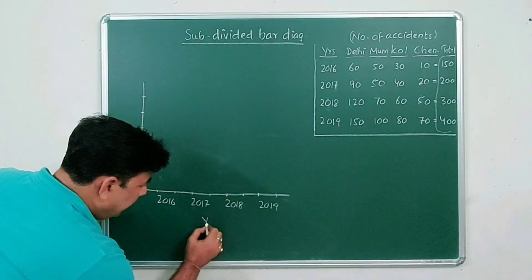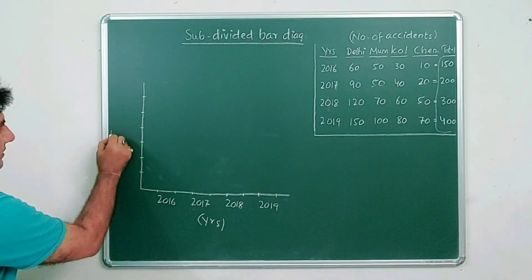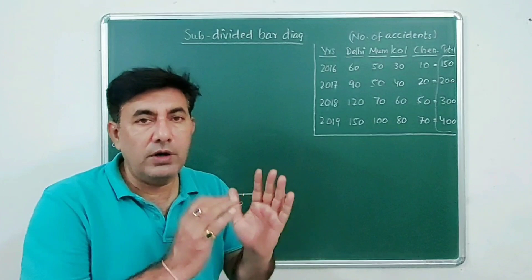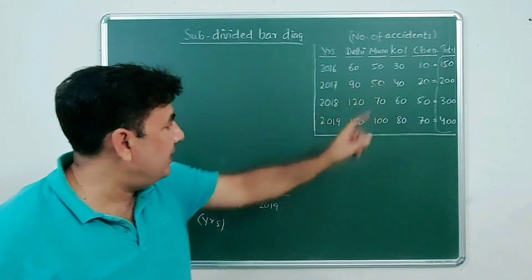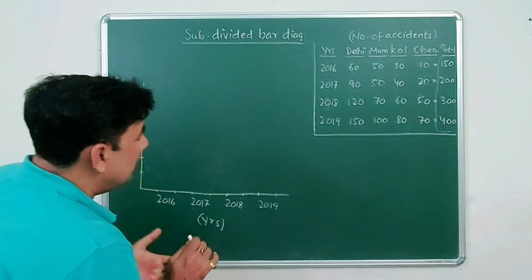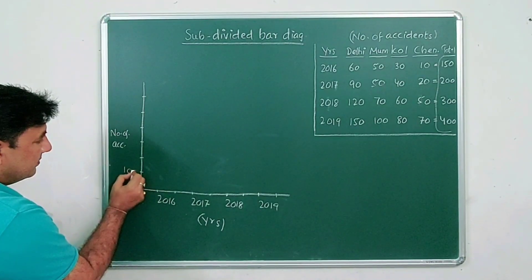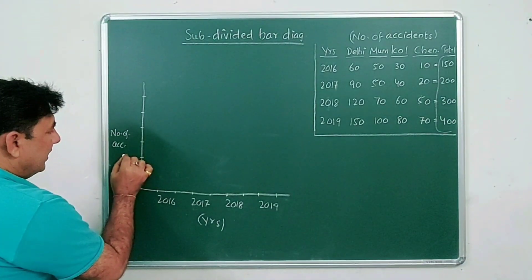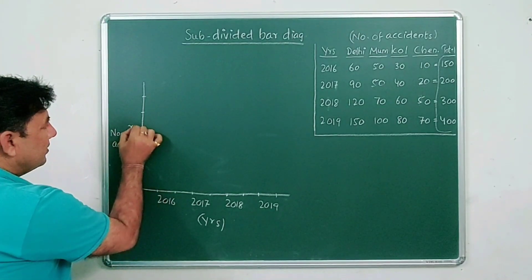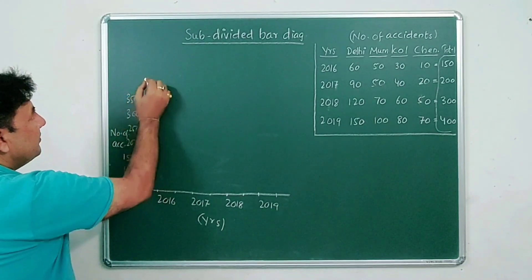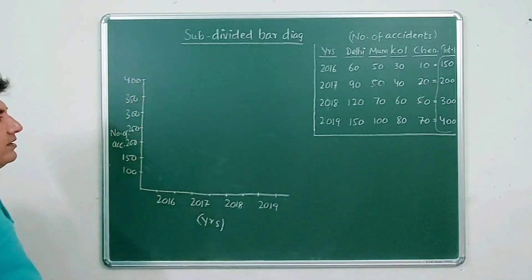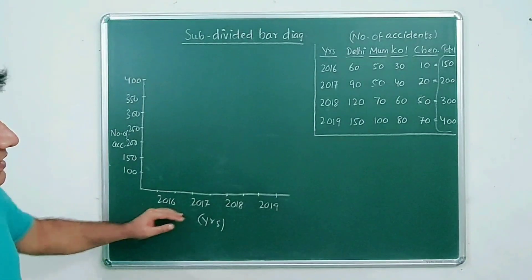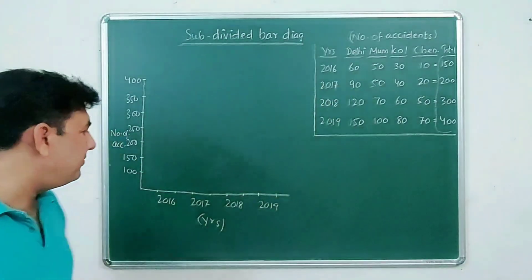Label the y-axis as 'number of accidents' and the x-axis as 'years.' The smallest total is 150 and the largest is 400. Mark the y-axis: 100, 150, 200, 250, 300, 350, 400. Now plot the total bars: in 2016, total is 150; 2017 is 200; 2018 is 300; 2019 is 400. Ensure all bar widths are equal.